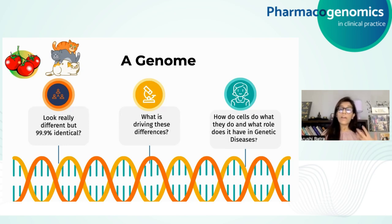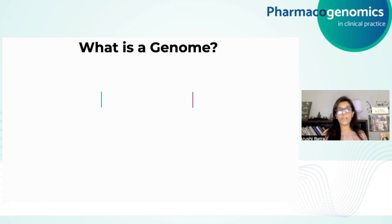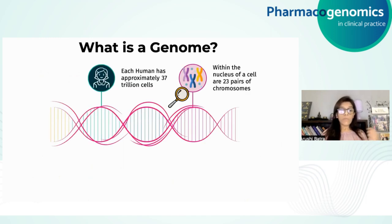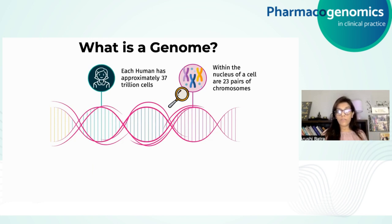Genetic diseases are another key area of genomic research. To understand what a genome is, we humans are made up of approximately 37 trillion cells, and in each cell there is a nucleus which contains 23 pairs of chromosomes for a total of 46 chromosomes. Now, 22 of these pairs are called autosomes and they look the same in both males and females. The 23rd pair is the sex chromosome that differs between male and female.